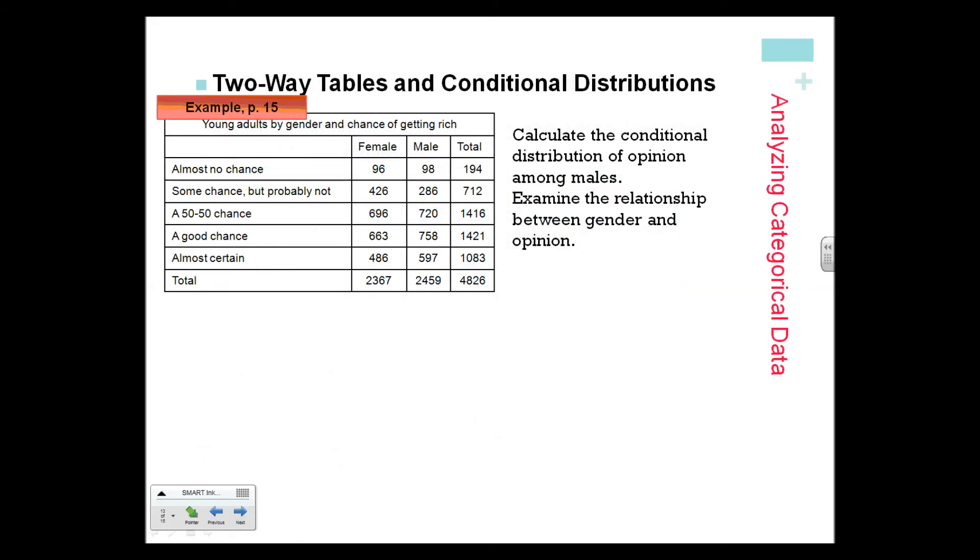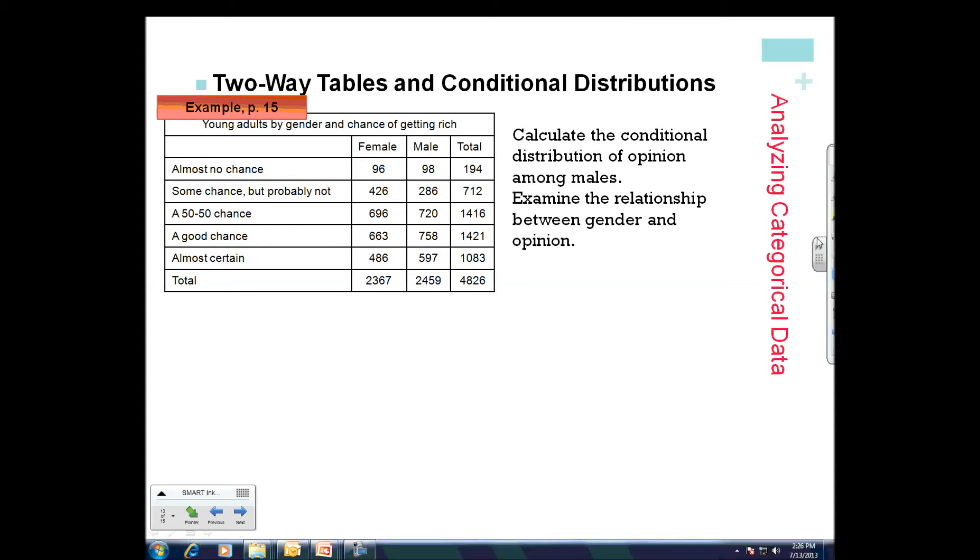Here's our data again. Notice it says calculate the conditional distribution of opinion among males to examine the relationship between gender and opinion. So we're calculating the distribution among males, so that is our condition.